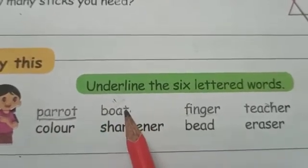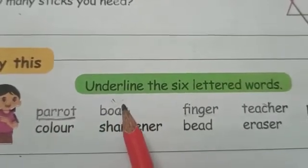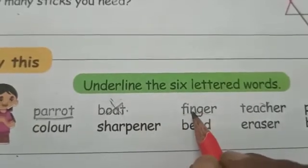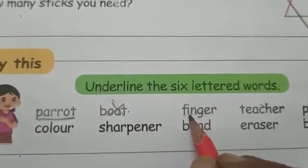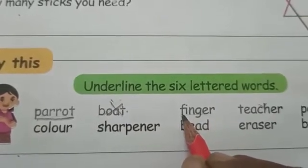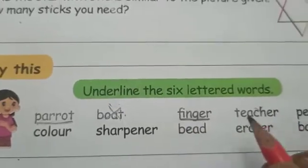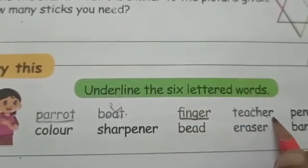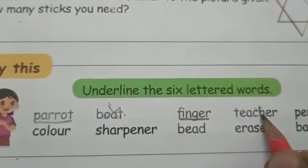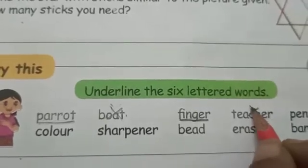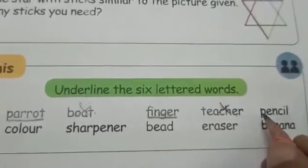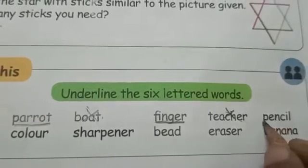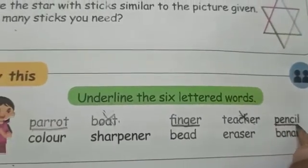One, two, three, four. It is four. This is the word finger. F-I-N-G-E-R. Finger. Six letters. Underline. T-E-A-C-H-E-R. Teacher. Seven. So it is not underlined. Pencil. P-E-N-C-I-L. Pencil. So, underline.